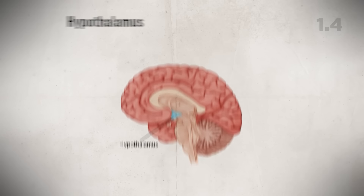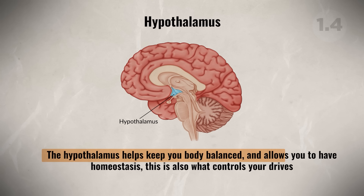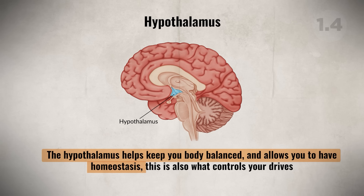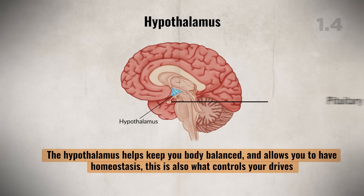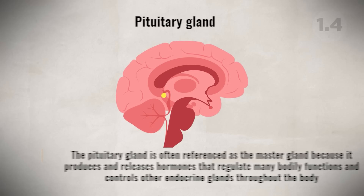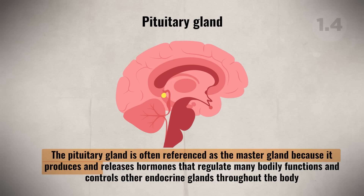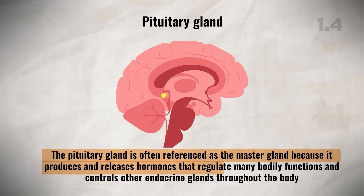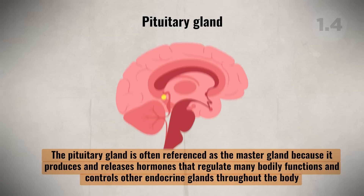One key structure of the limbic system is the hypothalamus, which helps keep your body balanced and maintains homeostasis. It also controls drives such as thirst, hunger, temperature, and sex. The hypothalamus works with the pituitary gland to regulate and control hormones. The pituitary gland is often called the master gland because it produces and releases hormones that regulate many bodily functions and controls other endocrine glands throughout the body.